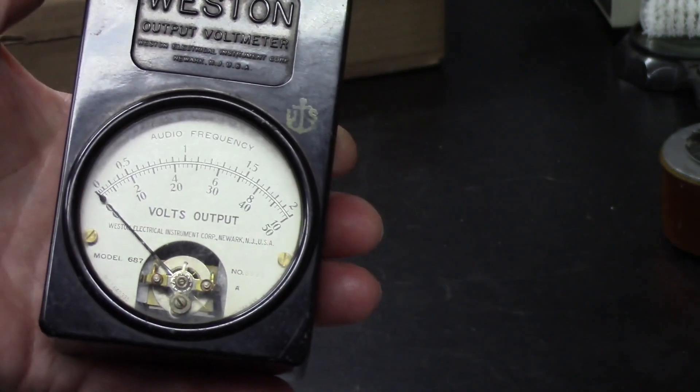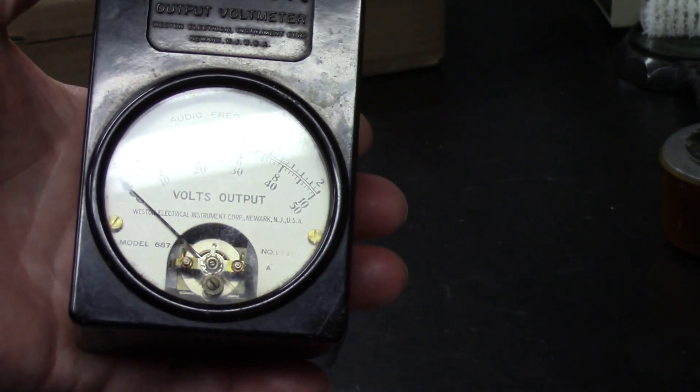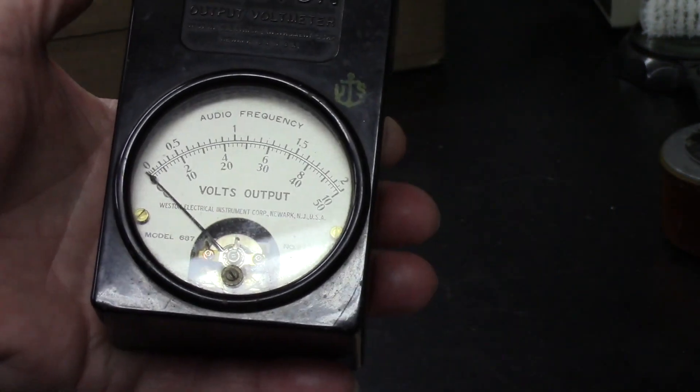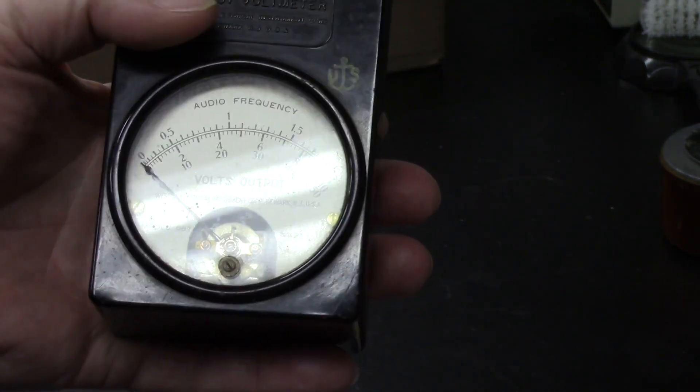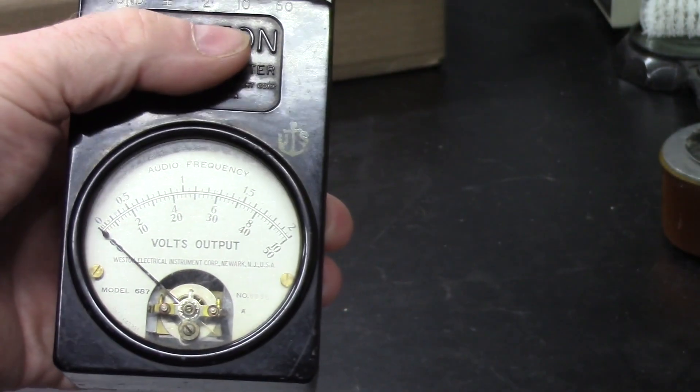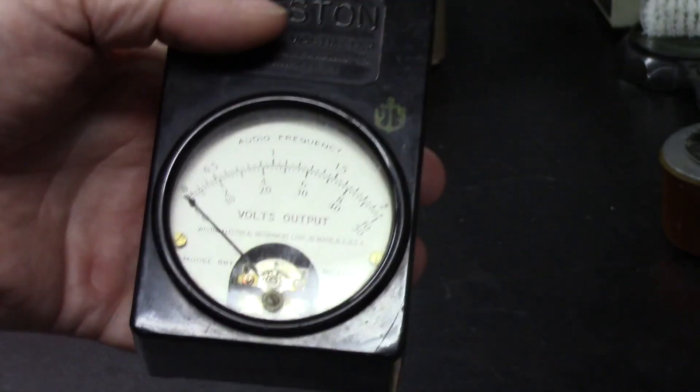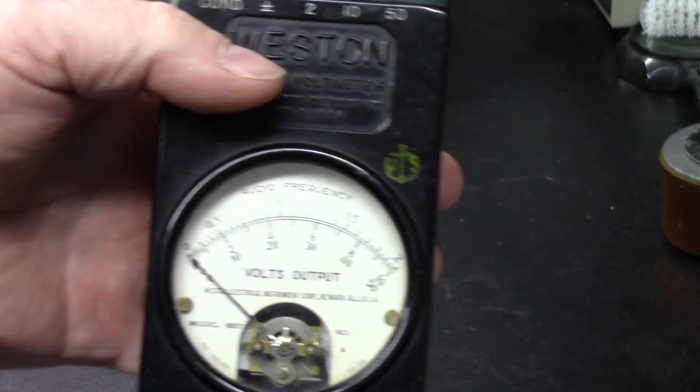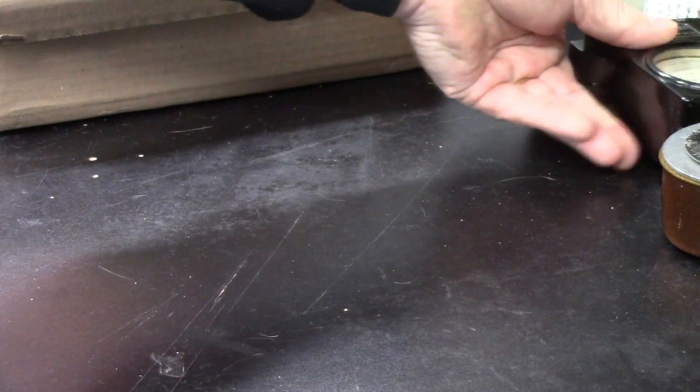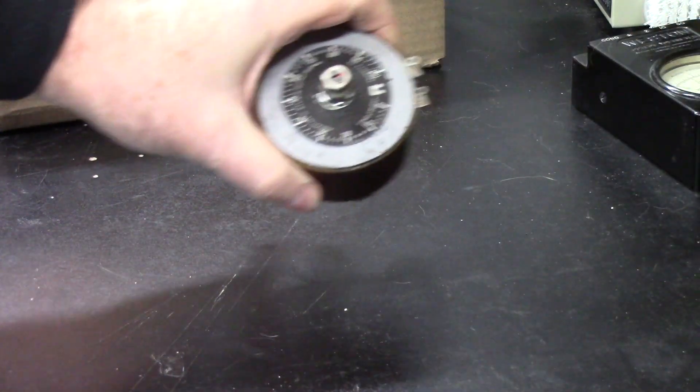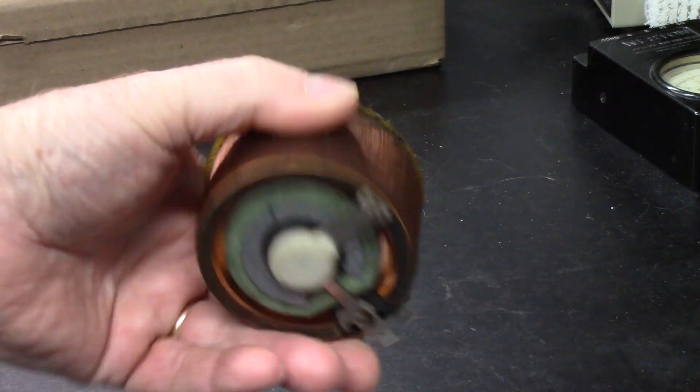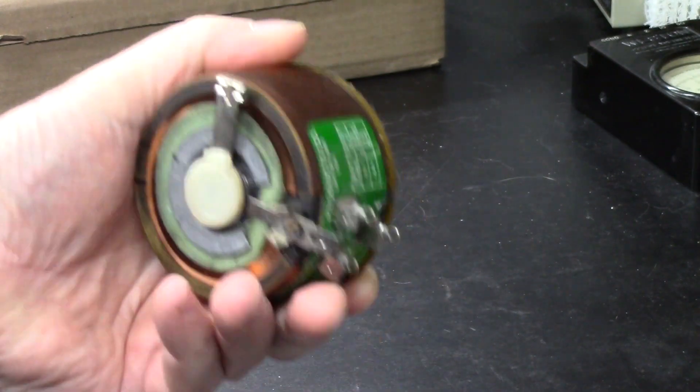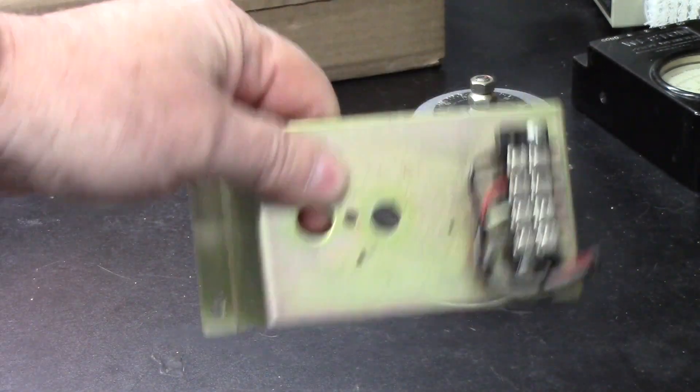This is a Weston. I picked this up on eBay about a year and a half ago. I took it apart. I put a new capacitor. It uses a 0.1 microfarad capacitor in there for when you need to filter out DC voltage. It actually works quite well. It's got a 2, a 10, and a 50 volt range on it. I plan on using that in there. That's going to have its own spot in the MFP.